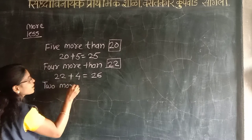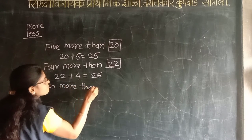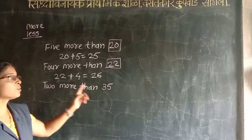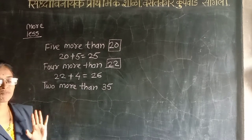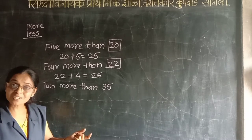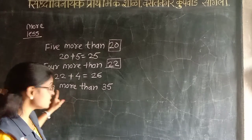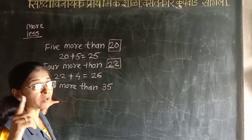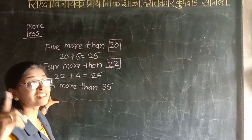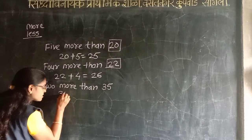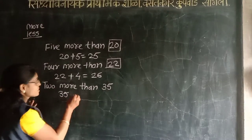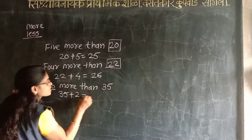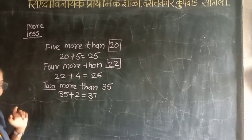More than. 35, 35. 2 more than 35. Means 35 plus 2. Manjee 37 — means 35 plus 2 equals 37. OK.